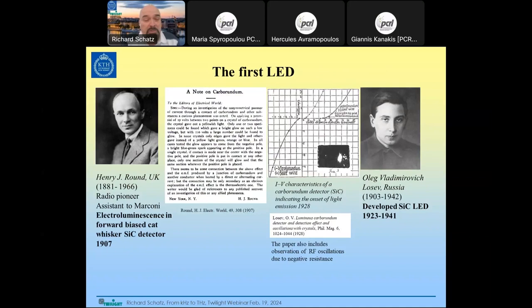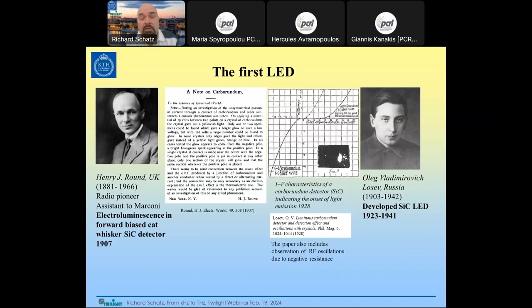Regarding light sources, Henry Round in the UK — a radio pioneer and assistant to Marconi — noted a curious thing while working with carborundum (silicon carbide) cat whisker detectors. He wrote that on applying 10 volts between two points on a carborundum crystal, it gave out a yellowish light. He couldn't understand it, as the current was too low to heat the crystal. What he had seen was the first electroluminescence — the first LED — though this was not understood at the time. This happened in 1907.